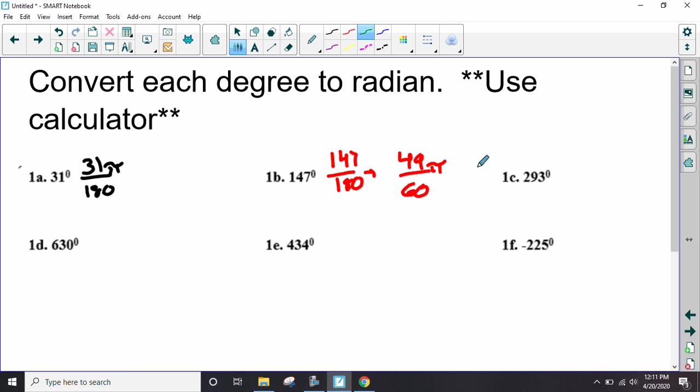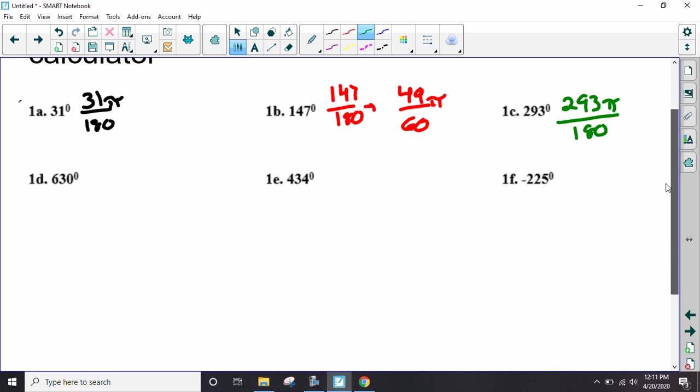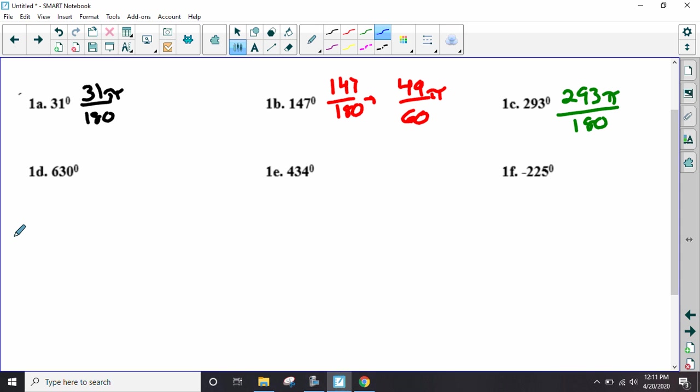So 293 over 180. That's probably, nope, didn't reduce. 293 over 180. 630 over 180. So 630 over 180 does reduce. This is 7π over 2. Moving on. 434 over 180. This actually does reduce. 217π over 90. Now we're not going to do a coterminal angle. We're just going to leave this negative because we can.